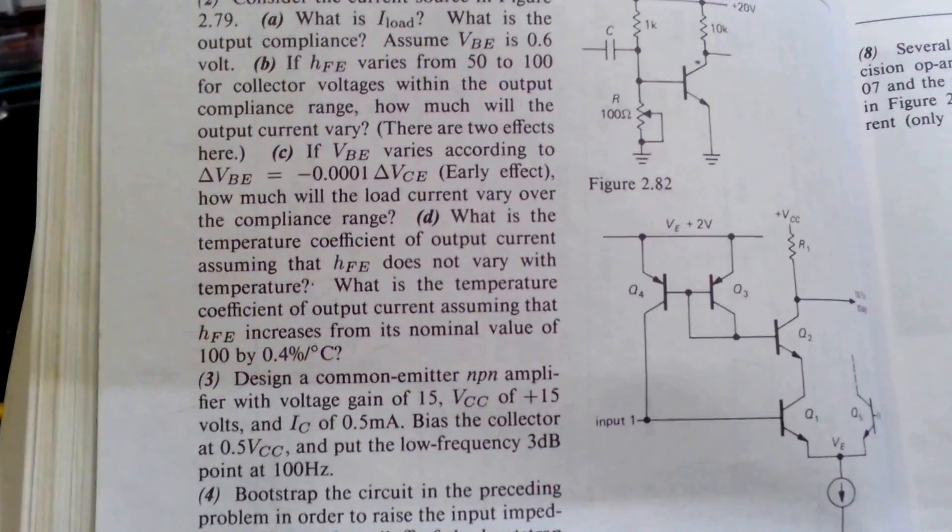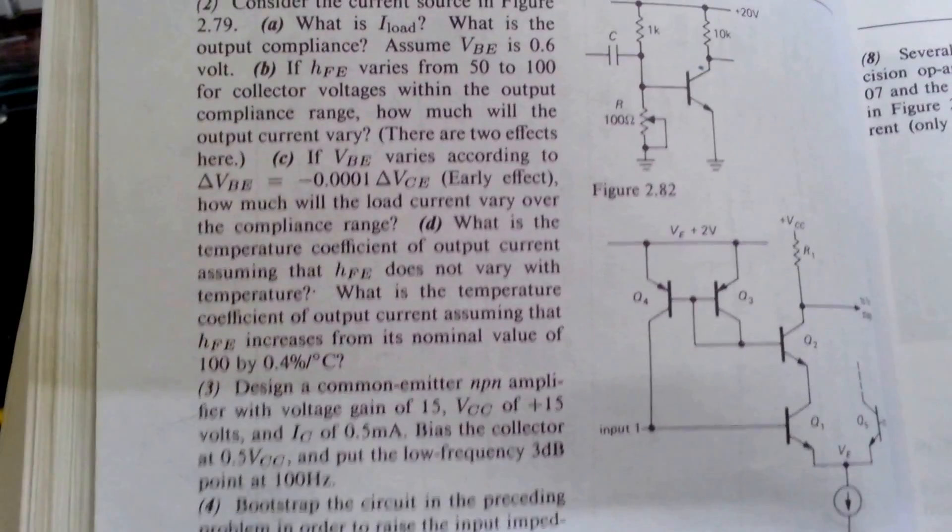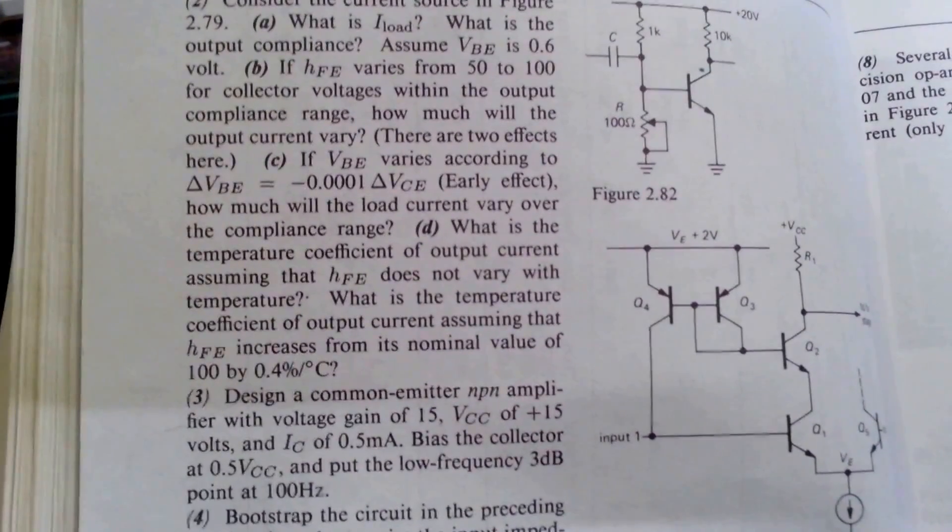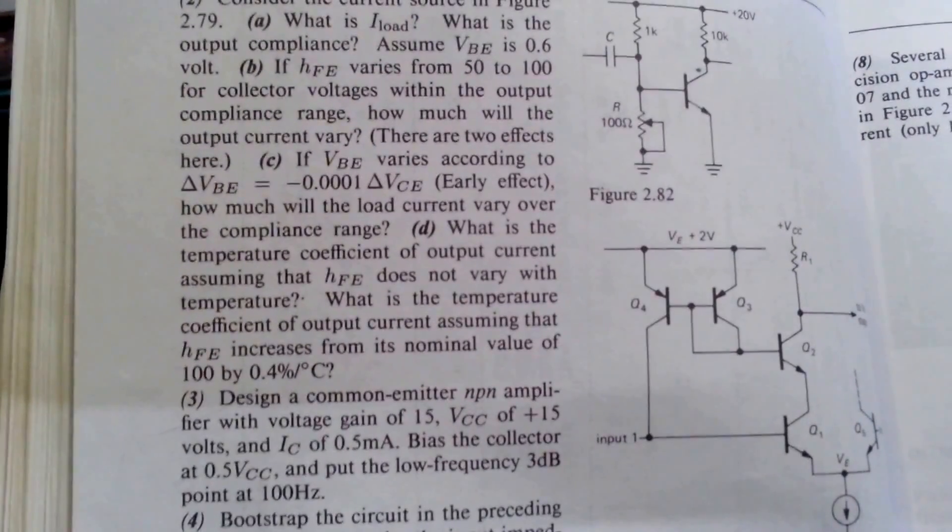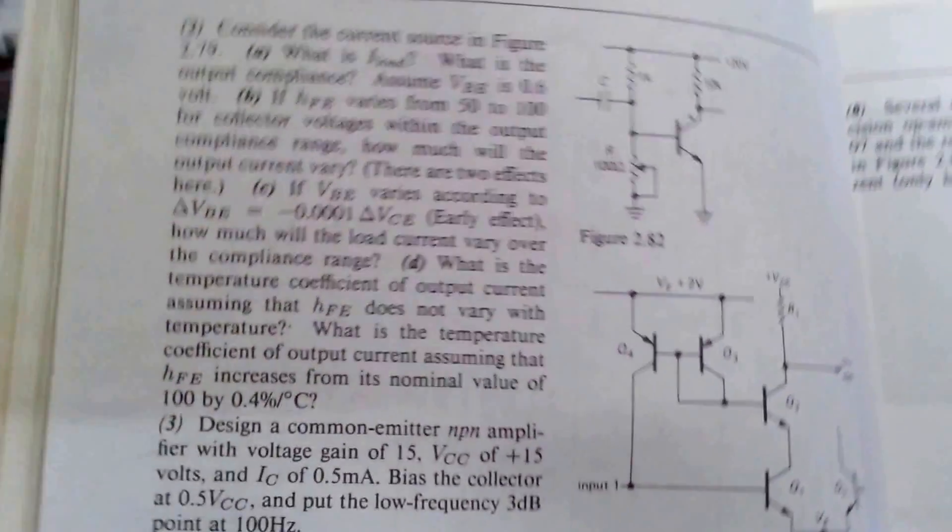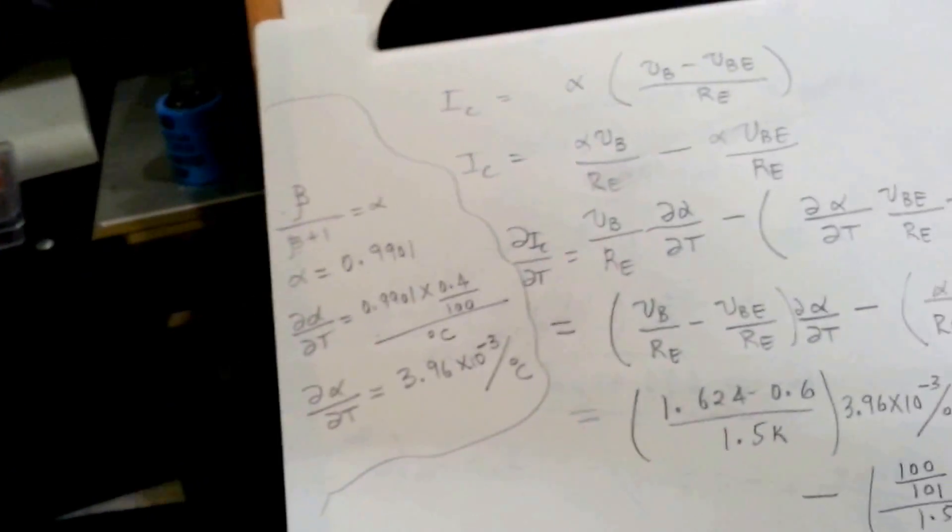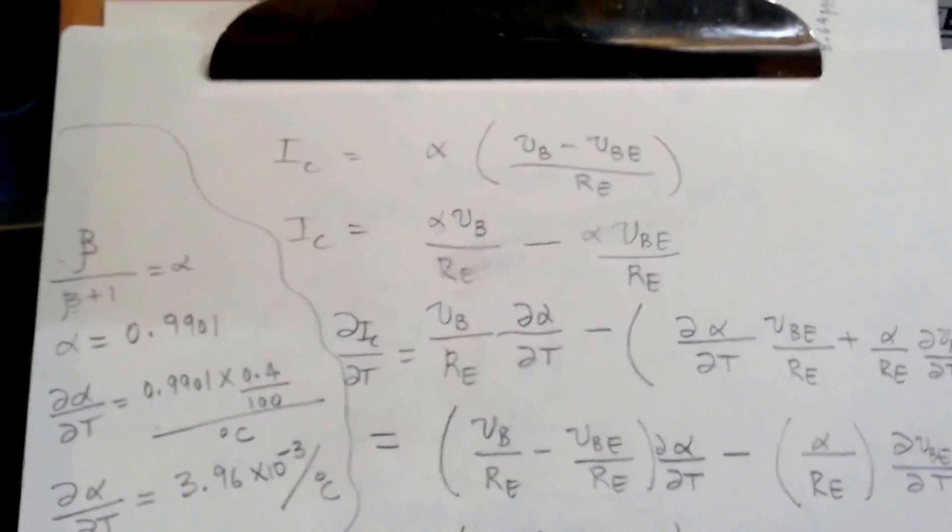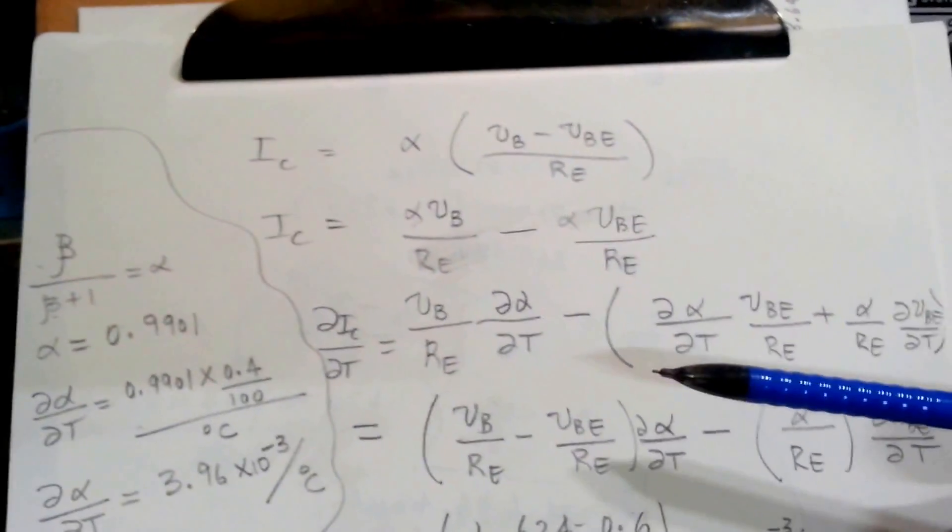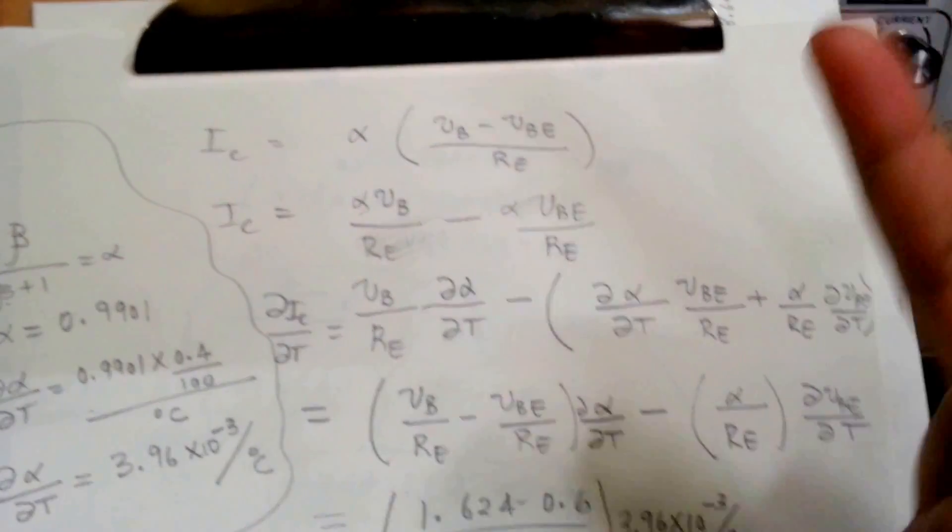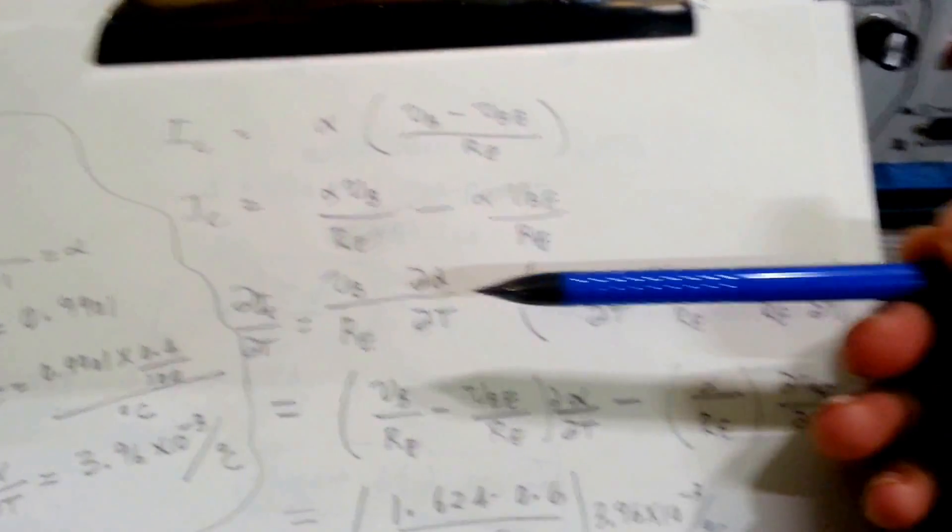The last part of part D says, what is the temperature coefficient of the output current, assuming that HFE increases from its nominal value of 100 by 0.4 percent per degree C? Now, as you can see, as the question indicated, we have two effects to consider. Not only do we have the temperature effect on base-to-emitter voltage, but also now the HFE is getting affected. So we have to count two effects of the temperature on two parameters of the transistor, on VBE and on HFE.